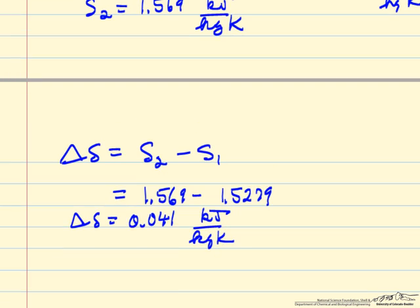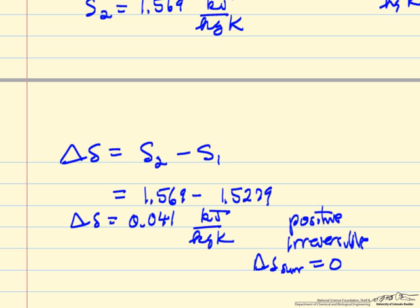Now if we check, does this make sense, it's positive, and our process where we remove the latch and the piston moves up very quickly, clearly irreversible. Since delta S for the surroundings is zero, then delta S for the system, in this case the gas, must be greater than zero, and indeed that's what we determined.